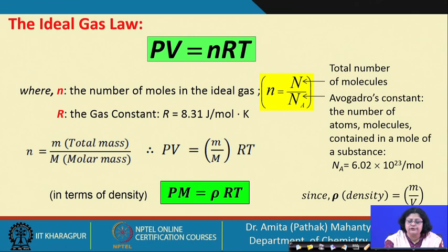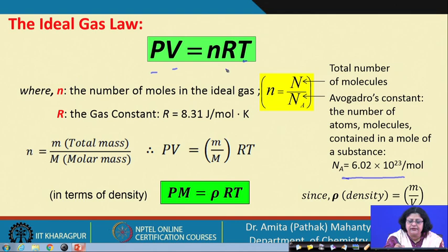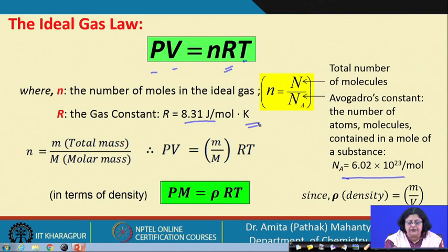Here, n is the number of moles of the gas we are dealing with — ideal gases. The number of moles is the total number of molecules divided by Avogadro's number, which is 6.023 × 10²³ per mole. Each of these parameters — pressure, volume, temperature — are macroscopic observable parameters we can measure. The gas constant R equals 8.314 joules per mole Kelvin. These are fundamental quantities we will revisit when developing the kinetic theory model.